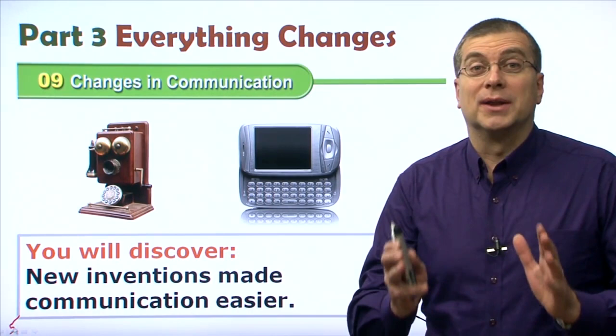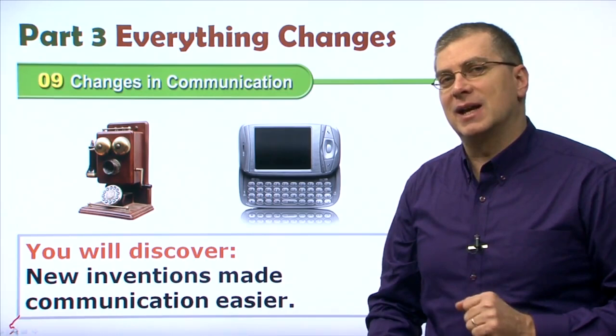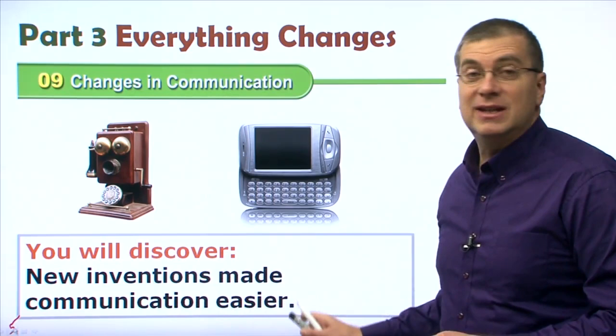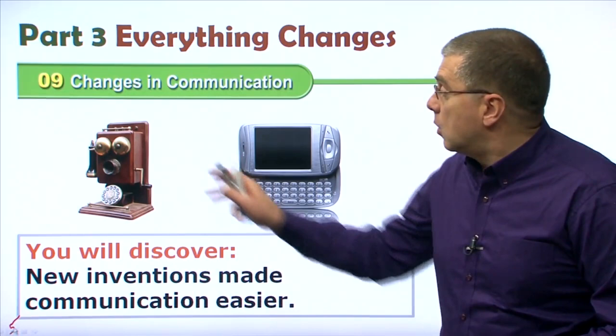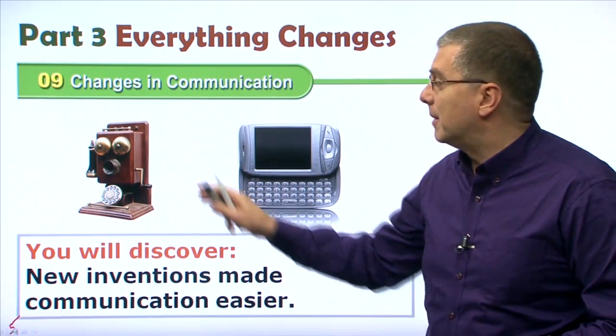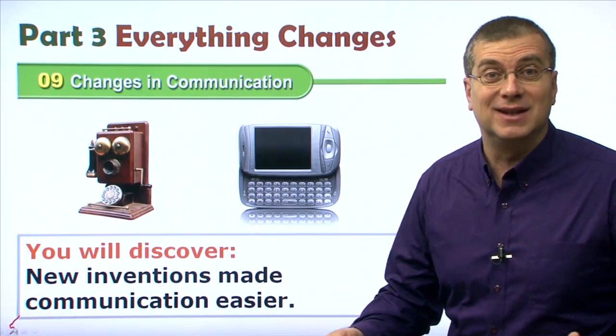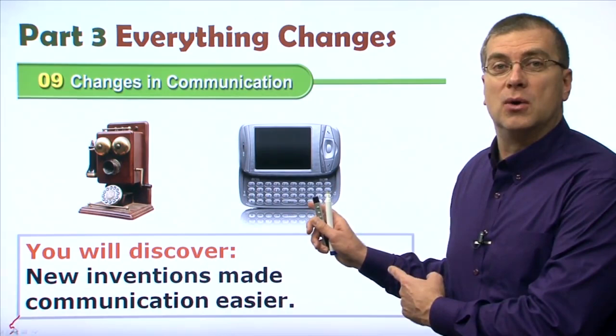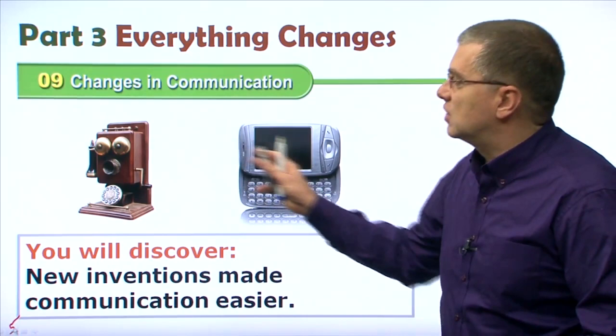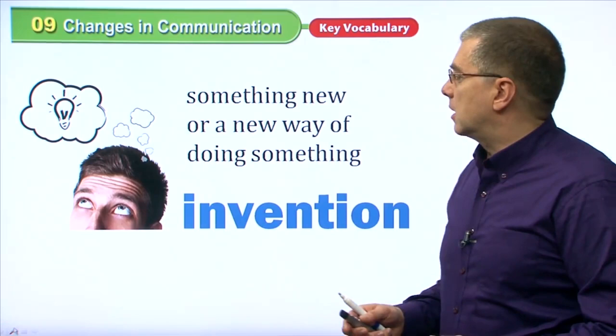Hello everybody. Welcome back to American Textbook Reading. I'm Brian Stewart. We're on Lesson 9, and we're talking about changes in communication. In this lesson, you will discover how new inventions made communication easier. We can see some different types of inventions on our title page here. This is a very old telephone — it was great when first invented, but now it's old-fashioned. This is a new invention: a cell phone, a really convenient invention we use nowadays.